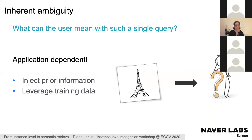The ambiguity makes it application-dependent, and people have solved it in several ways. Earlier approaches injected prior information by designing pipelines enforcing invariance properties or geometric consistencies. A more familiar approach leverages training, which is what the most recent deep-learning-based approaches do, given access to example queries and correctly retrieved results.